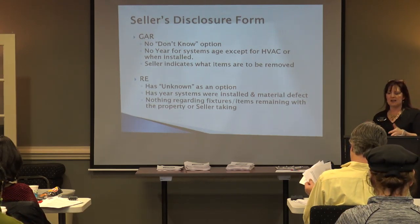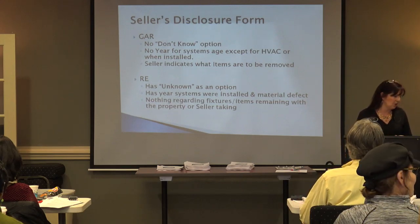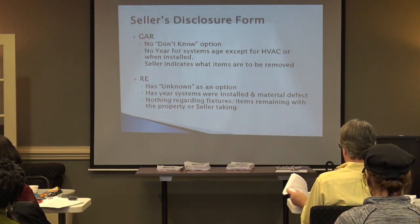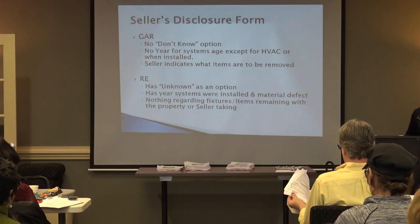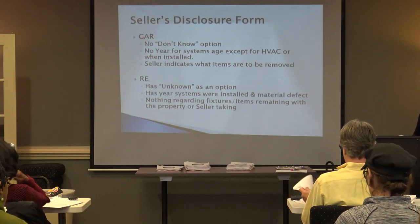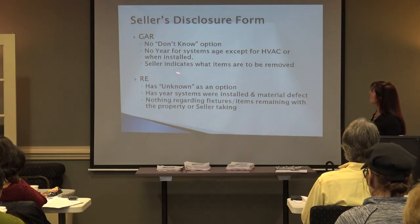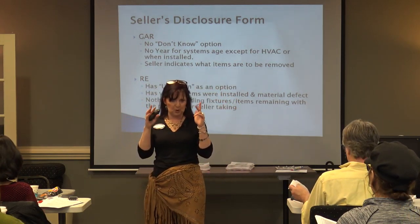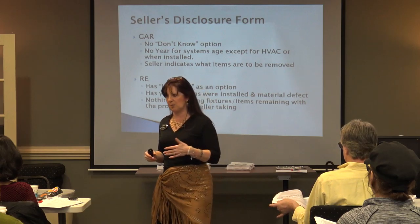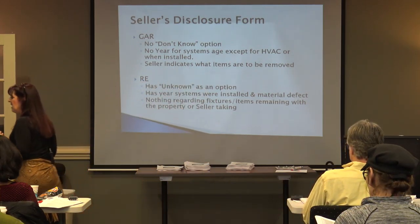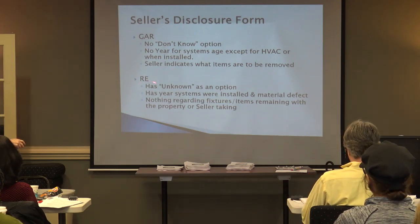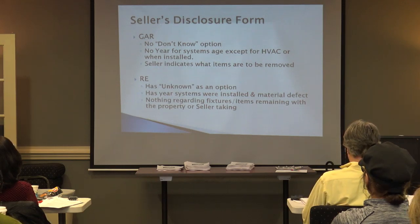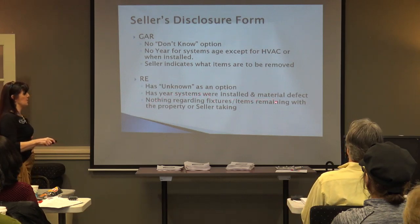Seller's property disclosure form. In the GAR contract package form, it has yes or no options — no 'I don't know' provision (removed a few years ago) — and no year for systems or age except for when the HVAC was installed. The last page has a list of potential personal property items indicating what the seller is leaving with the property and what they're taking. In the RE seller's disclosure form, there is an option for unknown, it does have a year when systems were installed, and if there are material defects.